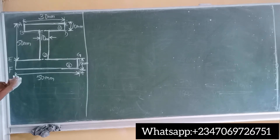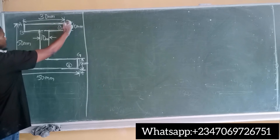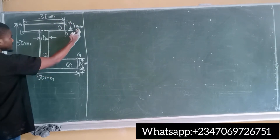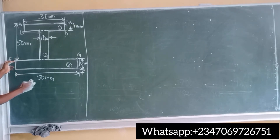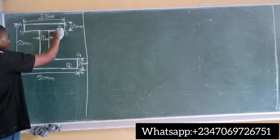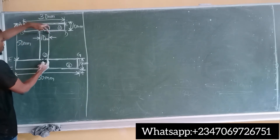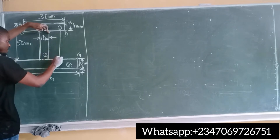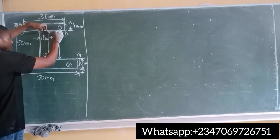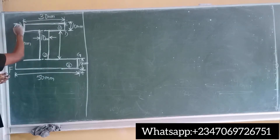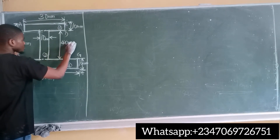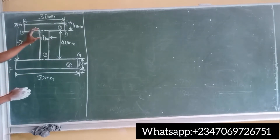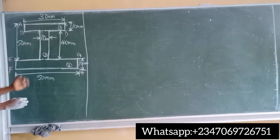The width of the first section is given as 10 millimeters, and the distance from point A down is given as 50 millimeters. So I can find the height of the middle segment as 50 minus 10, which gives 40 millimeters. The width of that segment is also 10 millimeters.